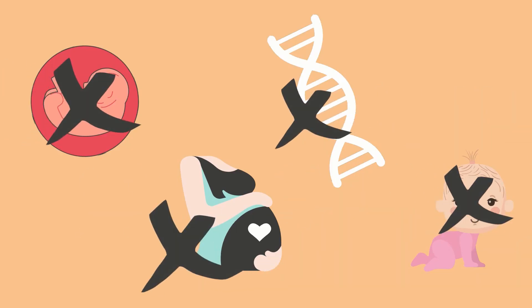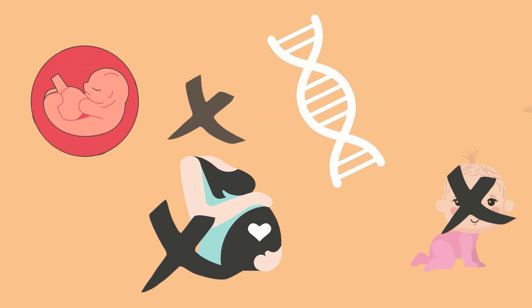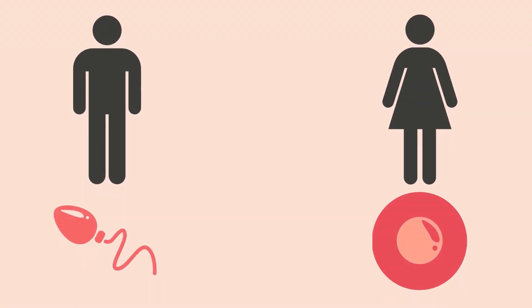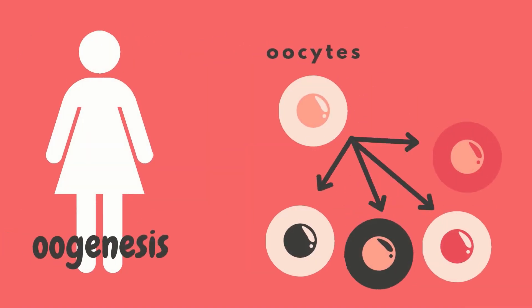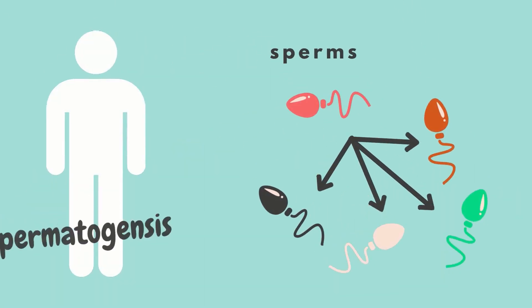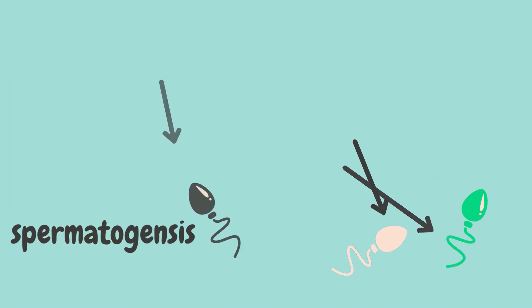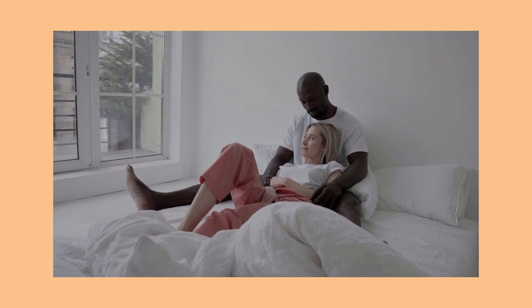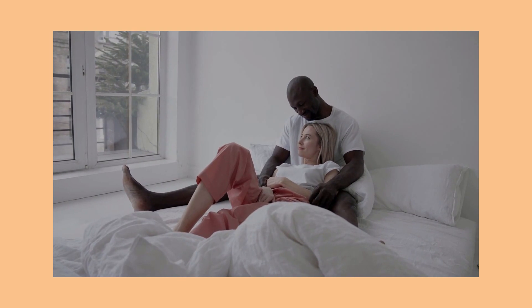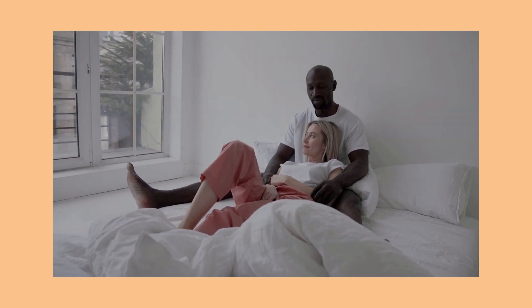Problems during meiosis can stop embryonic development and sometimes cause spontaneous miscarriages, genetic errors, and birth defects such as Down syndrome. Both males and females use meiosis to produce their gametes, although there are some key differences between the sexes at certain stages. In females, the process is called oogenesis since it produces oocytes and ultimately yields mature ova or eggs. The male counterpart is spermatogenesis, the production of sperm. While they occur at different times and locations depending on the sex, both processes begin meiosis in essentially the same way.